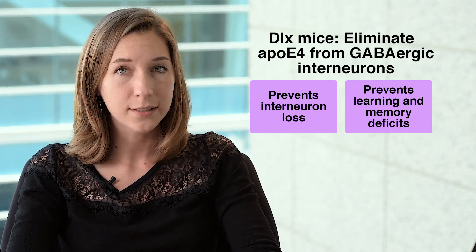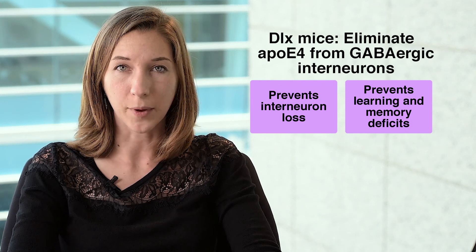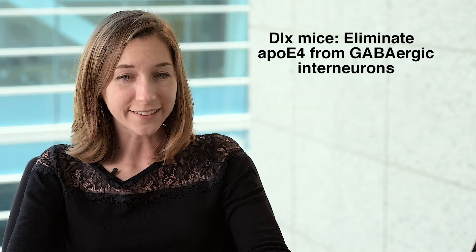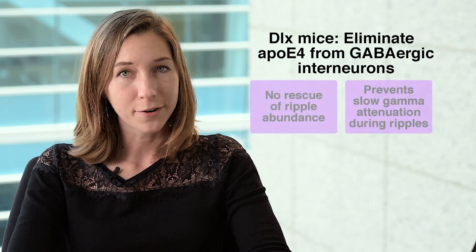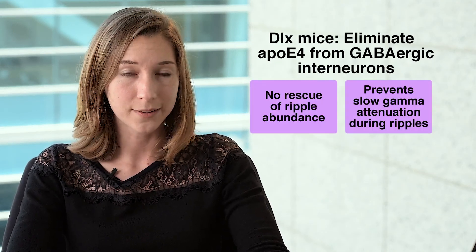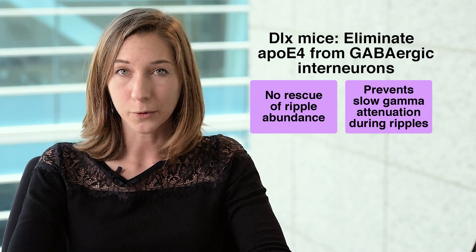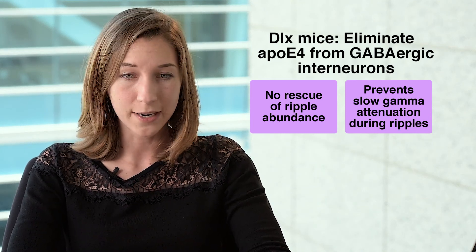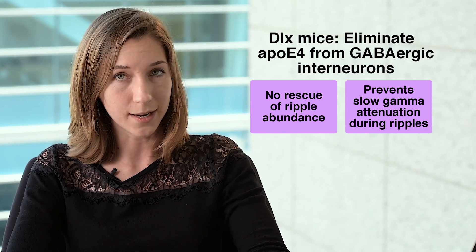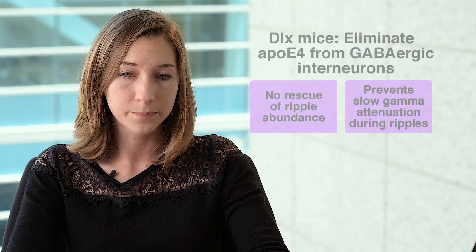The removal of ApoE4 specifically from GABAergic interneurons is sufficient to prevent interneuron loss and learning and memory deficits. We reasoned that any network abnormalities underlying memory impairment should also be rescued in these mice. Strikingly, we found that the DLX mice showed reduced ripple abundance, just like the ApoE4 mice. However, the slow gamma in the remaining ripples was much higher than in ApoE4 mice and similar to what we saw in ApoE3 mice.